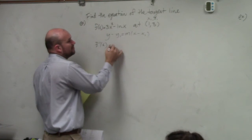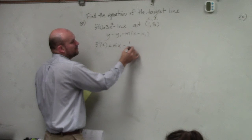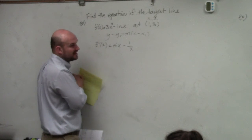And here, I can just use the power rule. So that's going to be 6x and then minus 1 over x. The derivative of ln of x is 1 over x.